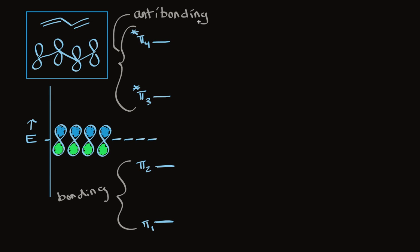Each one of these p orbitals in 1,3-butadiene brings an electron with it, so we have four electrons in this pi system — that's why we write the two double bonds. We need to put four electrons in these molecular orbitals, and notice that the bonding orbitals can accommodate all four electrons. Furthermore, all four electrons are in orbitals that are more stable than the p orbitals, so this molecular orbital system is stabilized energetically. This explains the stability of alkenes.